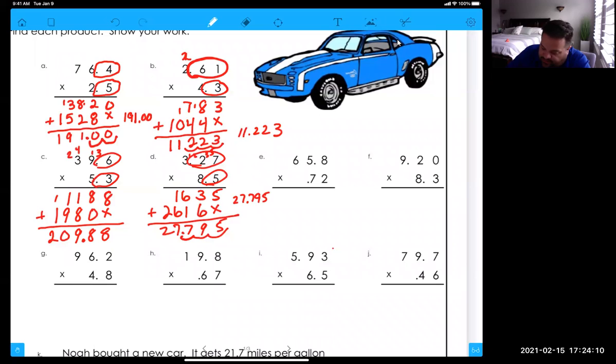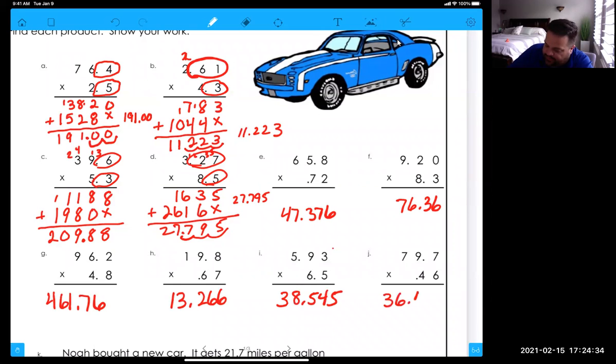Okay, just so you can check your answers, I'm just going to give you the answers. 47.376, this one is 76.36. Double-check your answers. There's 461.76, 13.266, 38.545, and 36.662.